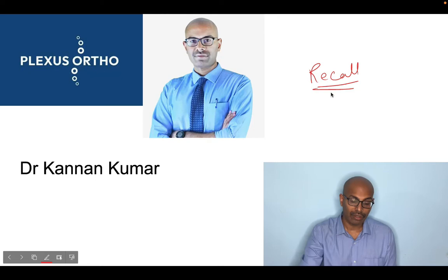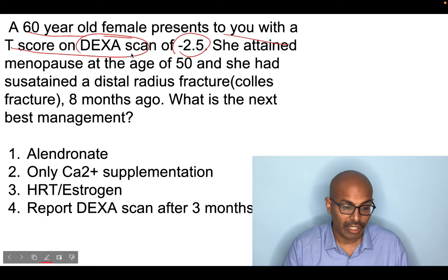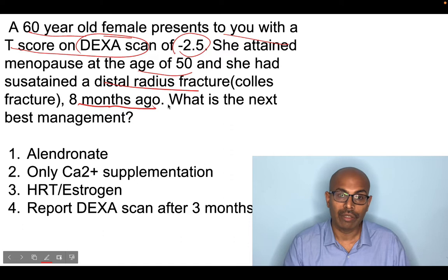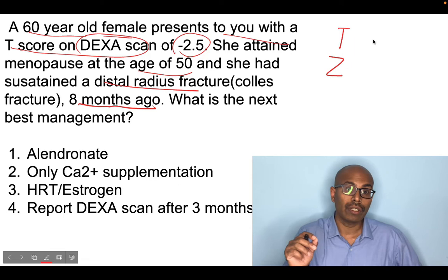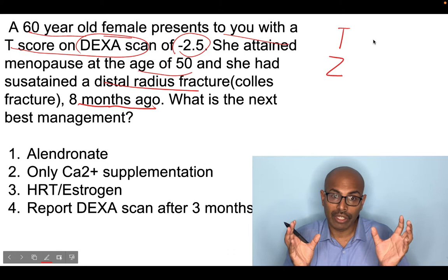The first question: a 60-year-old female presents with a T-score of minus 2.5 on the DEXA scan. She attained menopause at the age of 50 and had a distal radius fracture about eight months ago. What is the next best management? T-score is in relation to a 30-year-old male or female patient — DEXA scan or bone mineral density is compared to a 30-year-old patient and is used for osteoporosis classification and management.